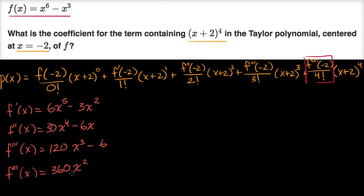So if we were to evaluate this at x equals negative two, the fourth derivative evaluated when x equals negative two is going to be 360 times negative two squared, which is four. I'm just going to keep that as 360 times four. But we're going to have to divide it by four factorial. So the whole coefficient is going to be 360 times four divided by four factorial, divided by four times three times two times one.